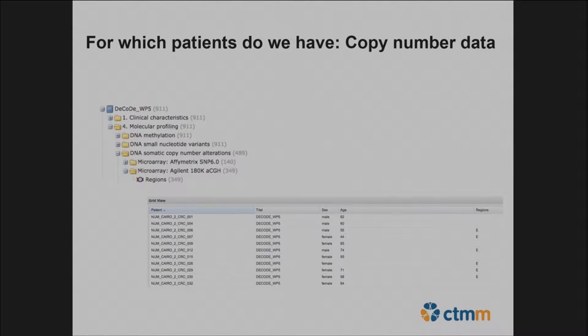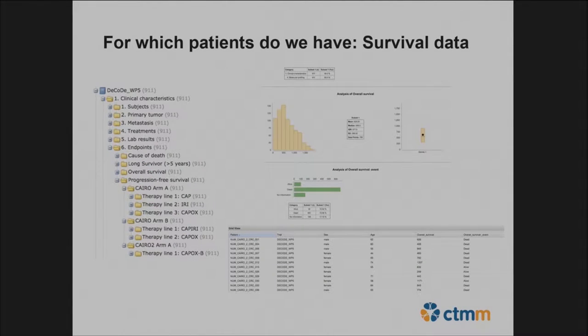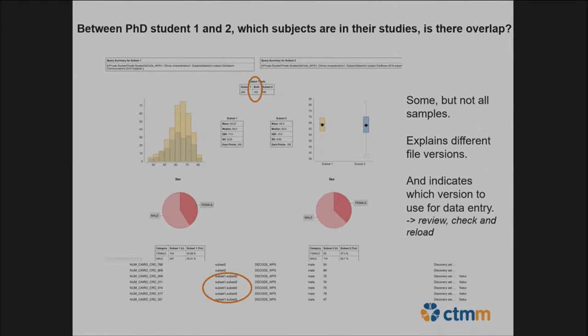To address the question of which patients have copy number data — this was an actual question from another PhD student who searched for hours through lab journals and couldn't find it. She came to me, and within a minute I could tell her which patients had copy number data using Transmart. You can do the same for gene data, survival data, and any other data type — that really saves searching time.